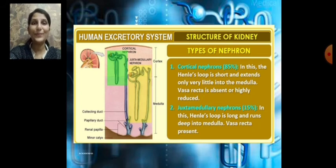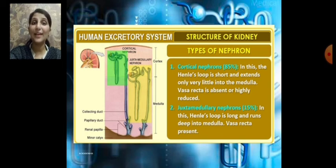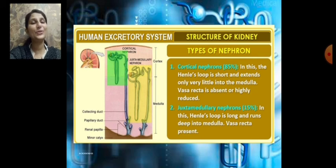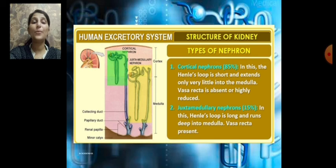To summarize: in cortical nephrons, Henle's loop is short, does not extend much into the medulla, and vasa recta is absent or reduced. In juxtamedullary nephrons, Henle's loop is very long, extends deep into the medulla, and vasa recta is present. In this module we learned about the internal structure of the kidney — specifically that the nephron is its structural and functional unit, consisting of the glomerulus and the renal tubule.